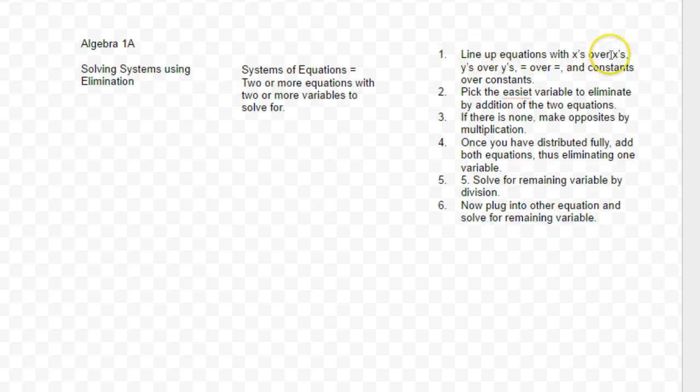So here's the steps. Line up equations with x's over x's, y's over y's, and equals over equals, and constants over constants. In other words, everything lines up perfectly. Pick the easiest variable to eliminate by addition of the two equations. If there is none, make opposites by multiplication.